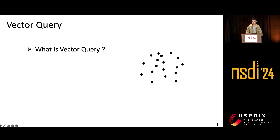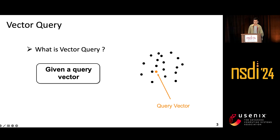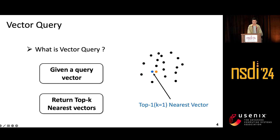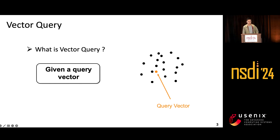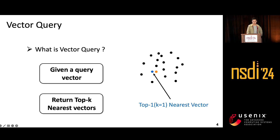Specifically, as shown by this animation, there are some data points that are the database vectors, and the orange point represents a query vector from users. A vector query aims to find the top-K nearest vectors as soon as possible. One straightforward approach is to enumerate every possible vector and record the distance, and the system returns the vector with the smallest distance. In this example, the system should return the blue point as the top-K result.